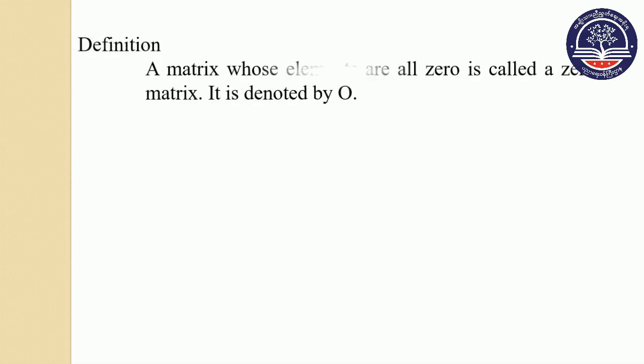A matrix whose elements are all zero is called a zero matrix, denoted by O. The entry of the zero matrix is all zero.